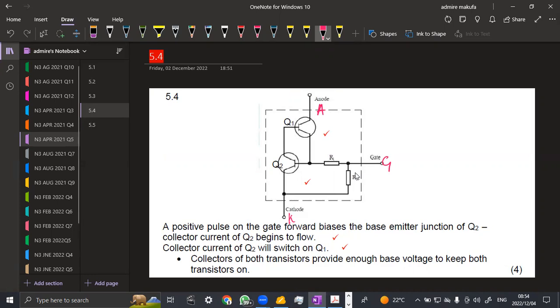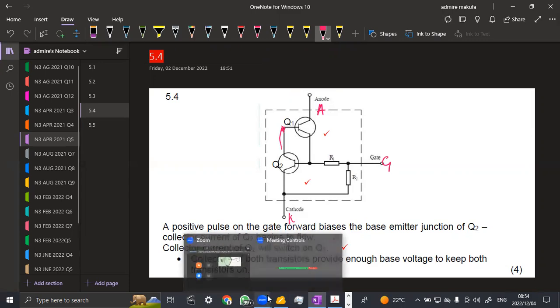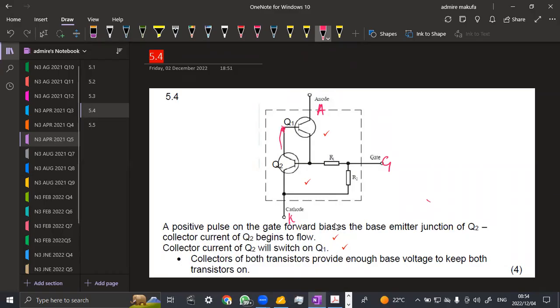Here we are given that a positive pulse on the gate forward biases the base emitter junction of Q2. That is our Q2, the base emitter. Collector current of Q2 begins to flow. So after that, we are going to have the collector current flowing. Now it is going to Q1, which is the second transistor. Collector current of Q2 will switch on Q1. It's going to switch this Q1. Then the collectors of both transistors provide enough base voltage to keep both transistors on.